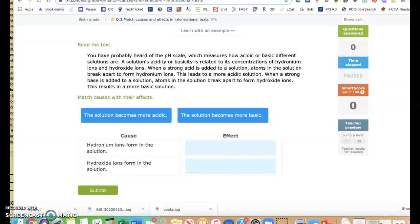I'm going to read the text and it looks like with this example I have the causes and I have to see what the effect is. It says you have probably heard of the pH scale, which measures how acidic or basic different solutions are. A solution's acidity or basicity is related to its concentrations of hydronium ions and hydroxide ions. When a strong acid is added to a solution, atoms in the solution break apart to form hydronium ions. This leads to a more acidic solution.